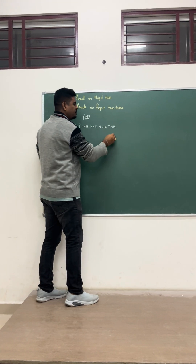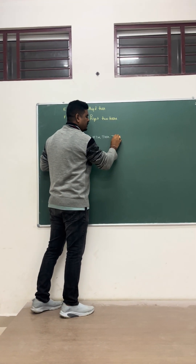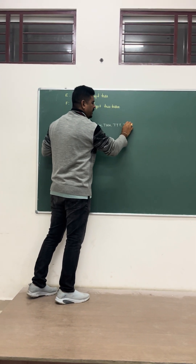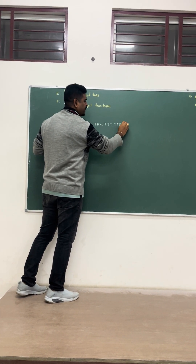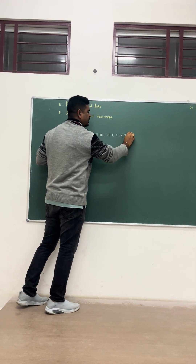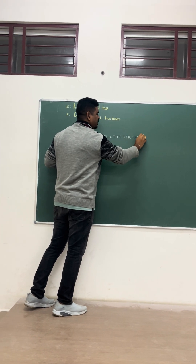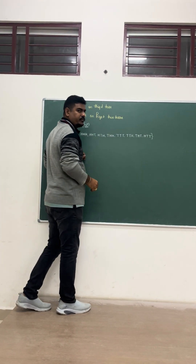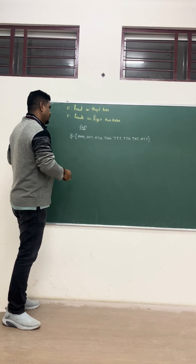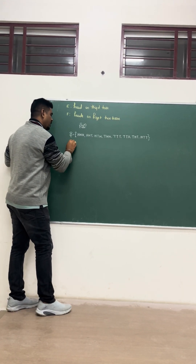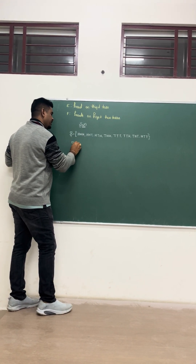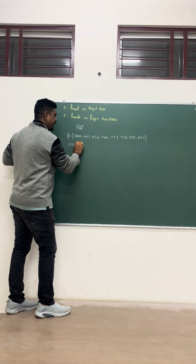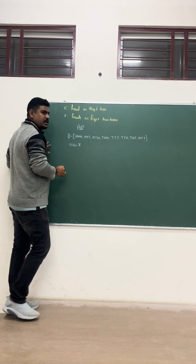Now we continue with tail outcomes: tail, tail, tail. Then tail, head, tail. Then tail, tail, head. Then head, tail, tail. So the total number of sample space elements we have is 8 — that is, 4 plus 4 equals 8. Clear to all of you?